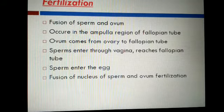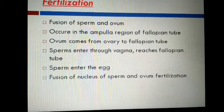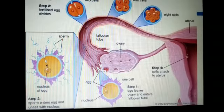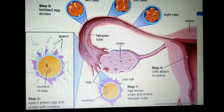The fallopian tube has three regions: isthmus, ampulla, and infundibulum. Fertilization occurs in the ampulla region of the fallopian tube. The egg is released from the ovary and reaches the ampulla region. Since sperm is motile, the motile sperm moves through the cervix, enters the uterus, and then reaches the ampulla region.